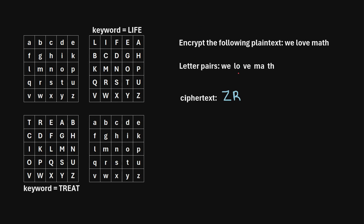We'll work through the same process. First, we identify the letter L in the top left square — here's L. Then we identify the next letter, O, in the bottom right square. Then we find where they intersect in the top right square. Drawing that out, they intersect at the capital letter O, so we write O as our next letter in the ciphertext. Then we find where they intersect in the bottom left square. Drawing some lines there, they intersect at the capital letter I. So I will be the next letter in our ciphertext.